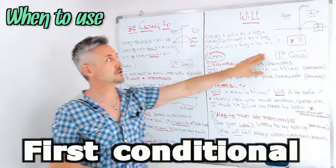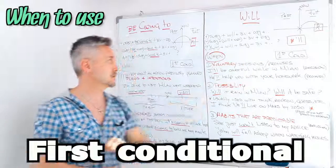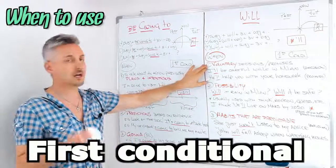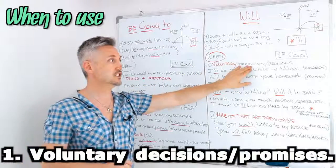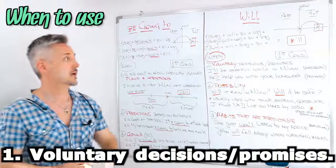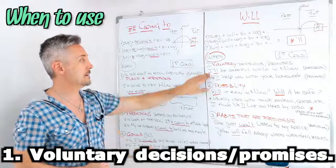Just to remind you that will is used for the first conditional. So the first usage of will is for voluntary decisions and promises.